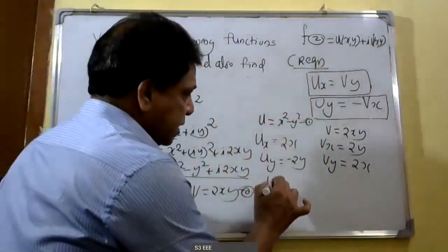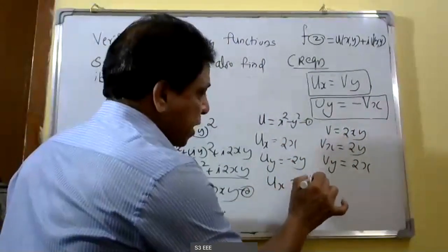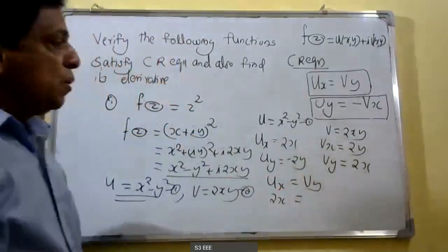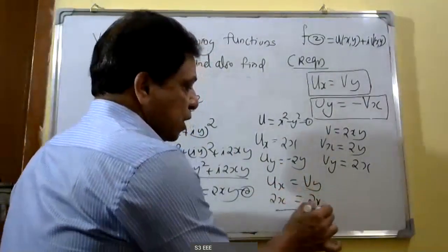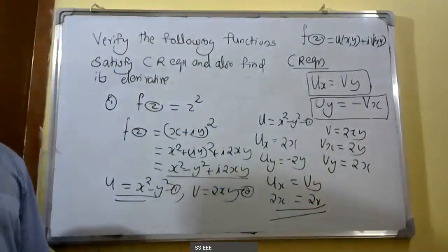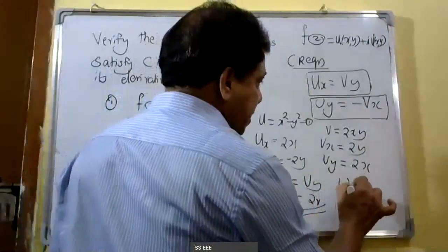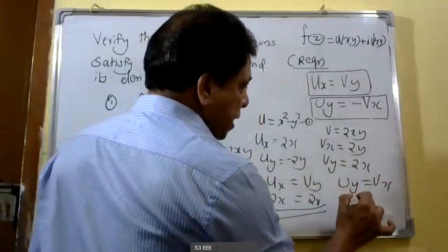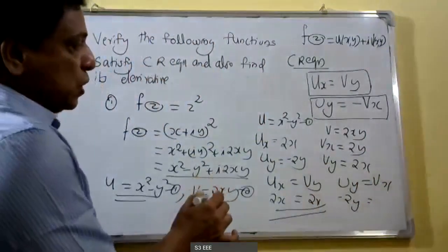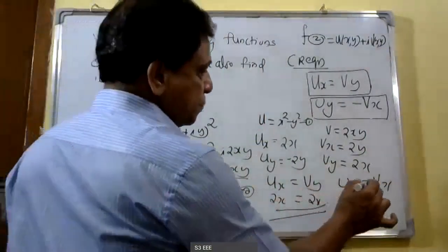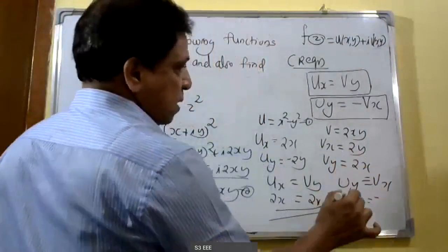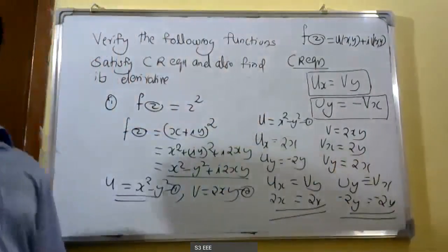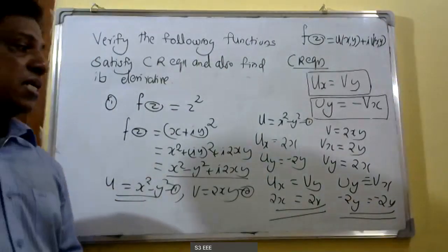Now we verify the Cauchy-Riemann equations. The first condition: u_x equals v_y. Here u_x equals 2x, and v_y equals 2x. Therefore the first equation is satisfied. Similarly, we check the second equation: u_y equals minus v_x. Here u_y equals minus 2y, and minus v_x equals minus 2y. Therefore both Cauchy-Riemann equations are satisfied.